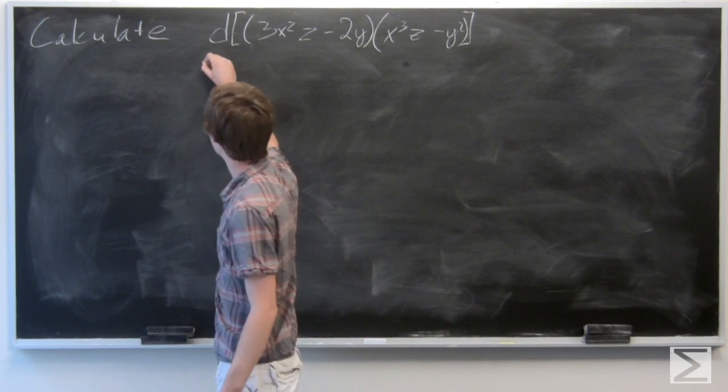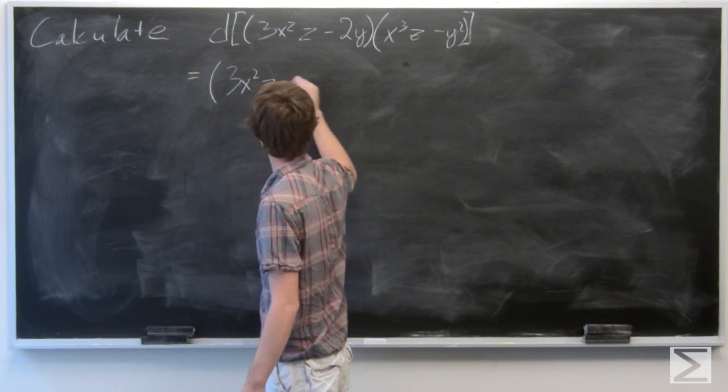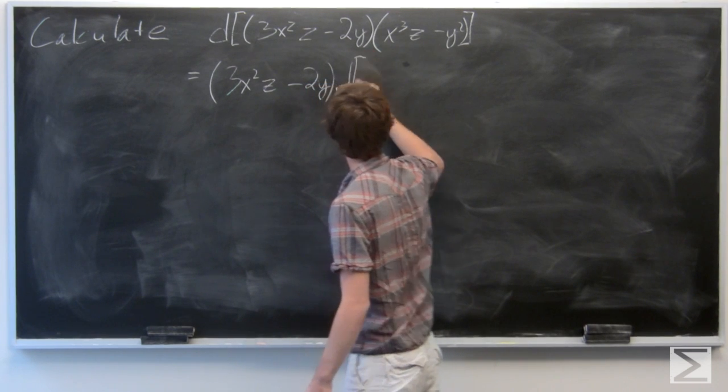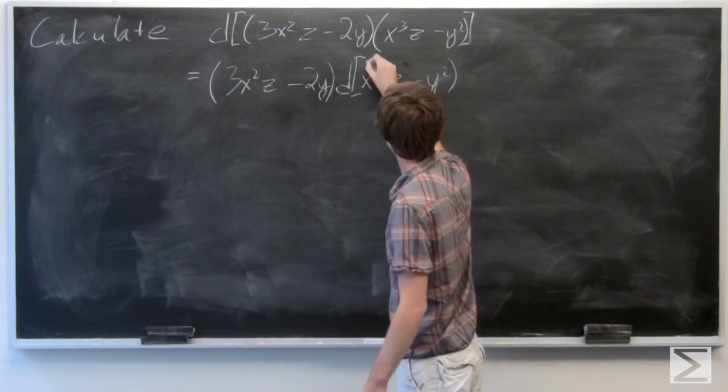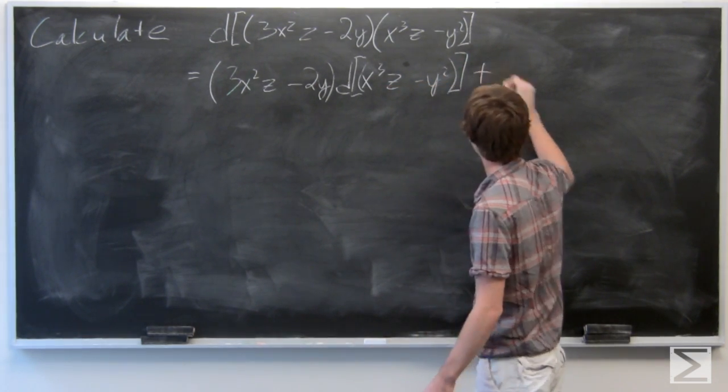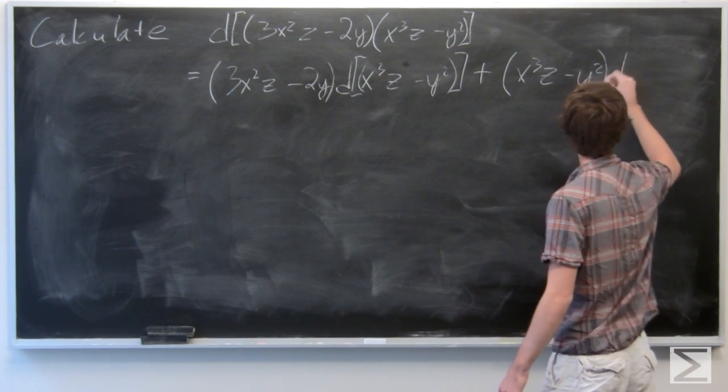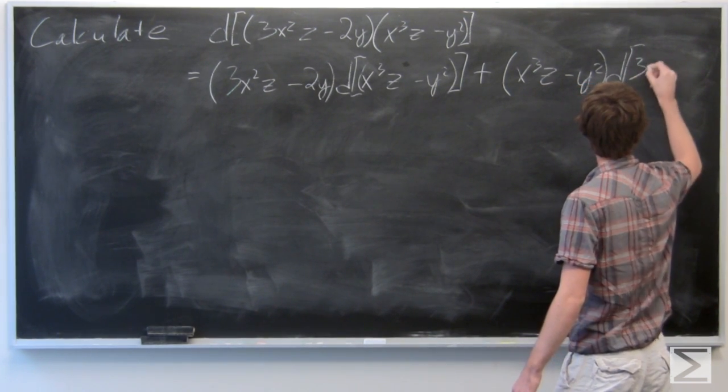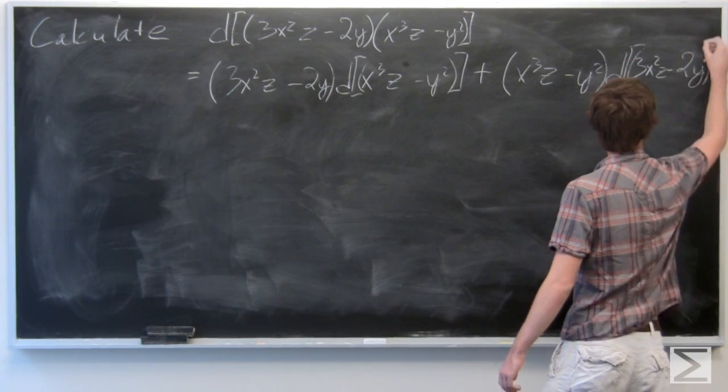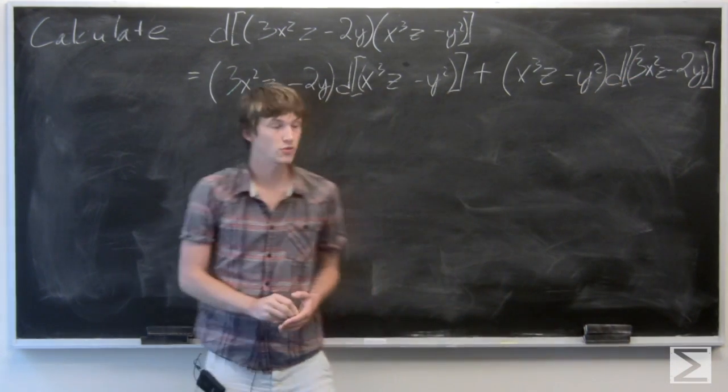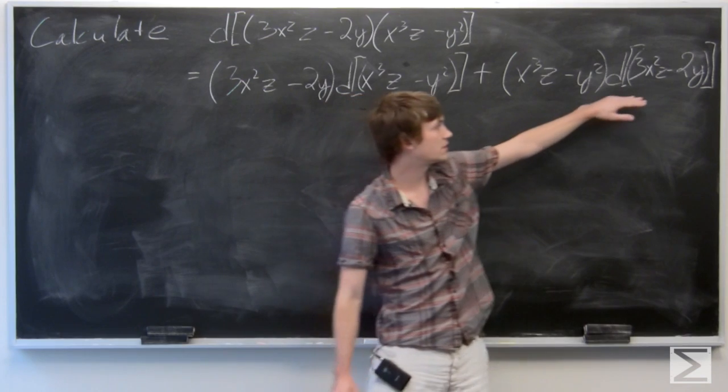We know by the product rule that this differential is equal to the first term times the differential of the second term plus the second term times the differential of the first.